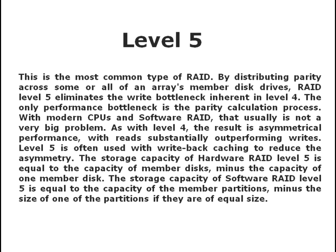RAID level 5 is the most common type of RAID. By distributing parity across some or all of an array's member disk drives, RAID level 5 eliminates the write bottleneck inherent in level 4. The only performance bottleneck is the parity calculation process. With modern CPUs and software RAID, that usually is not a very big problem. As with level 4, the result is asymmetrical performance, with reads substantially outperforming writes. Level 5 is often used with write-back caching to reduce the asymmetry.